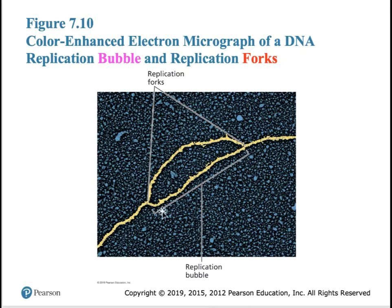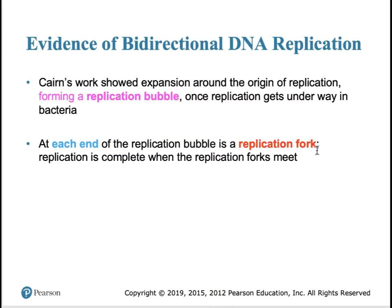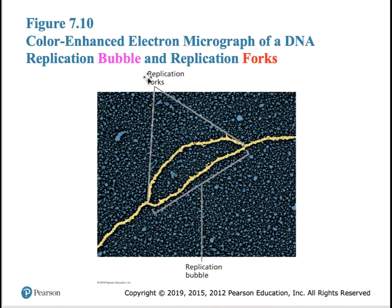Most bacteria have a single origin of replication positioned at 12 o'clock on their circular chromosome. Eukaryotic chromosomes are far larger and a single origin would not copy DNA in a timely fashion, so eukaryotic chromosomes have acquired multiple origins of replication. A replication bubble contains one strand of parental DNA and one newly made strand on both sides. The bubble enlarges as the replication machine travels outward — each end is called a replication fork. Each replication bubble has two replication forks: a right fork and a left fork, which are identical except for being upside down relative to each other.